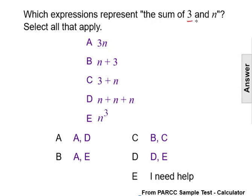Our two given things are 3 and n. Our clue word here is 'sum.' Sum is a clue word for addition. We're going to be adding the two things.